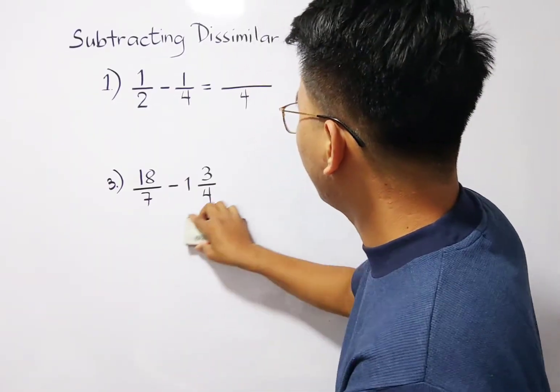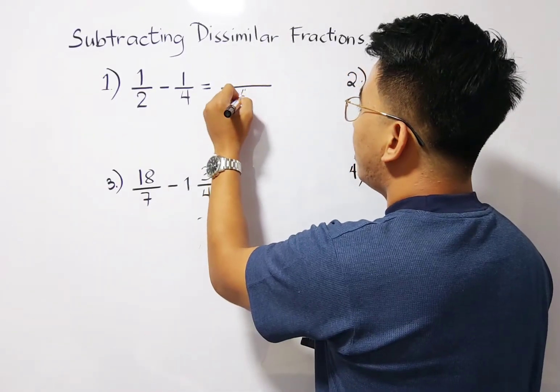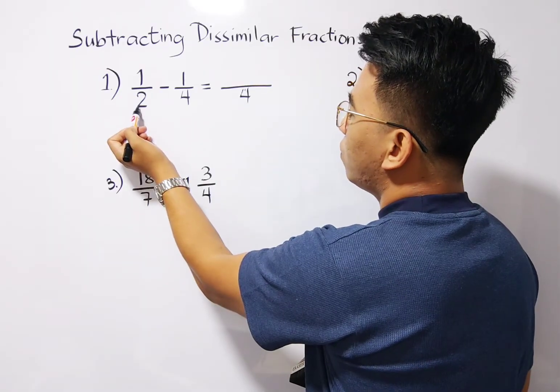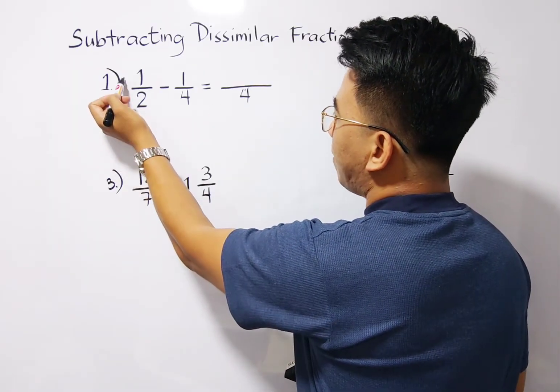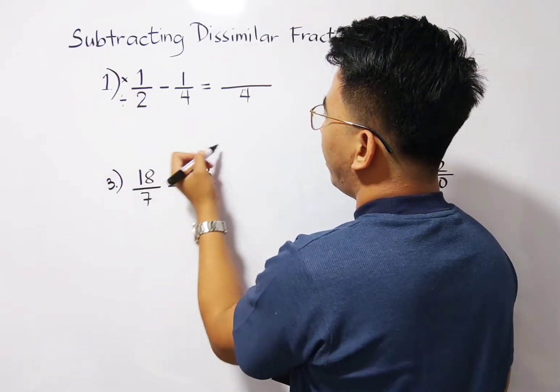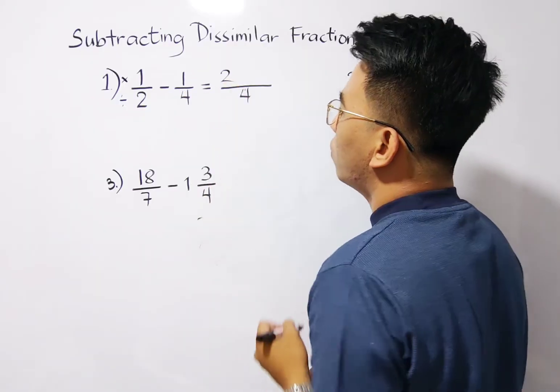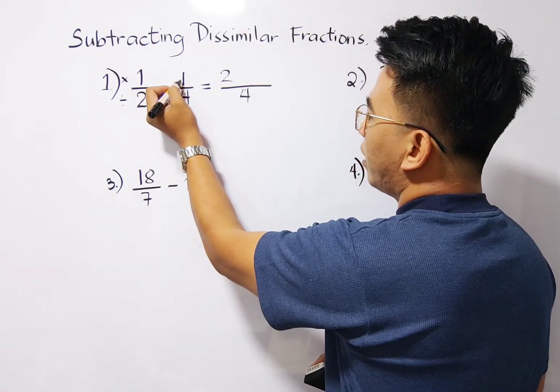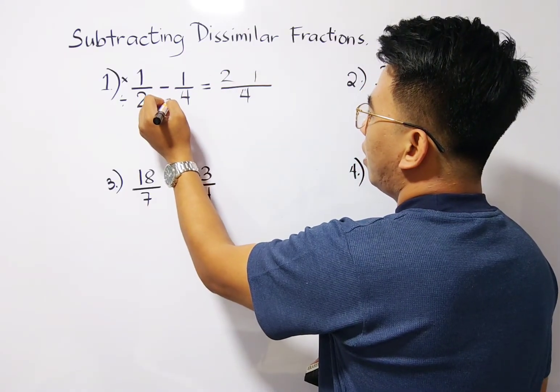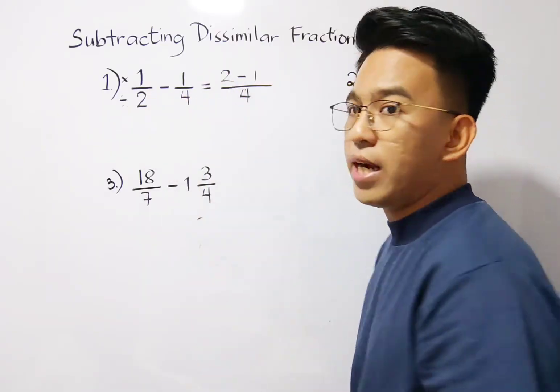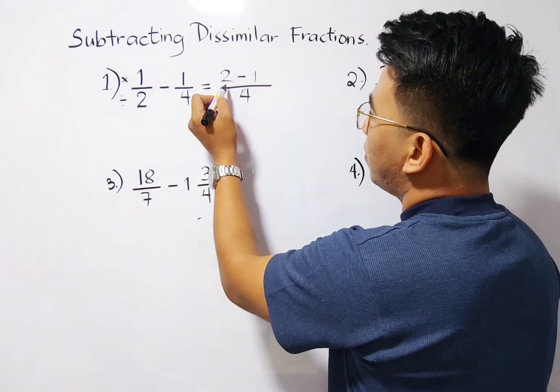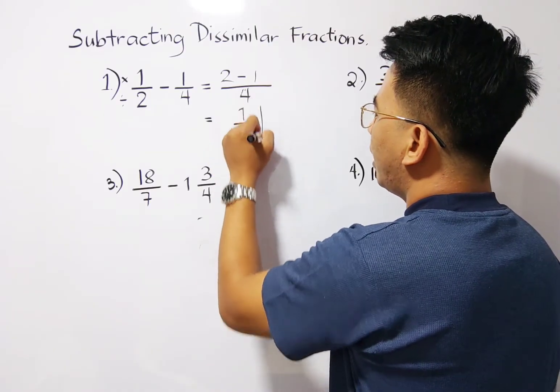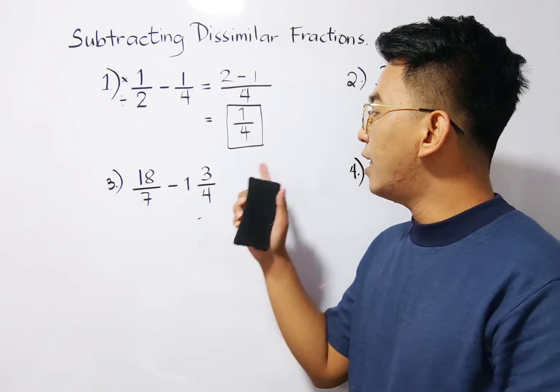Okay, let me erase this one. And what's next after determining the least common denominator is we will have this process. 4 divided by 2, that is 2, and then times 1. So you need to divide and multiply. 4 divided by 2, that is 2, times 1, that will give you 2. Next, 4 divided by 4, which is 1, times 1, this is 1. And then copy your operation here. We have subtraction. So what's next is to simplify your numerator, which is 2 minus 1, that would give you the answer of 1 over 4. And this is the final answer, guys, because 1 over 4 is already in simplified form.